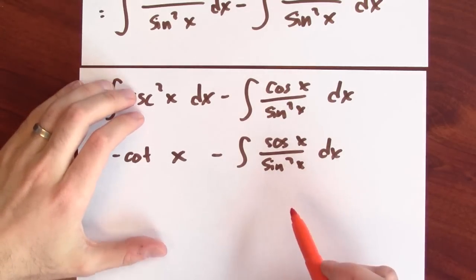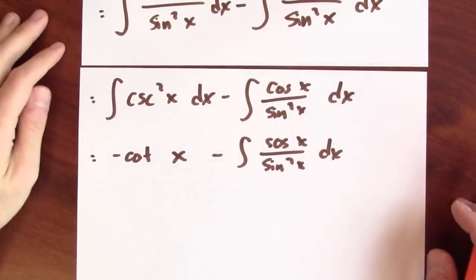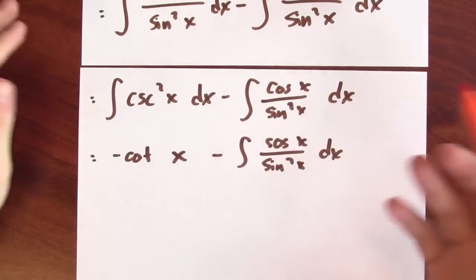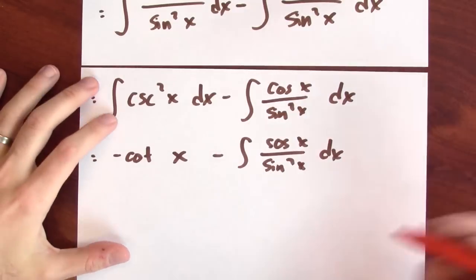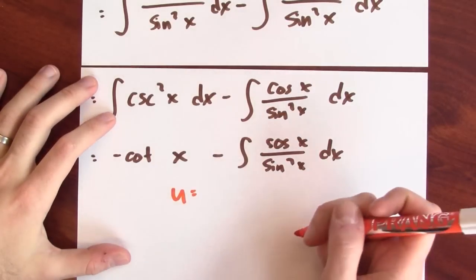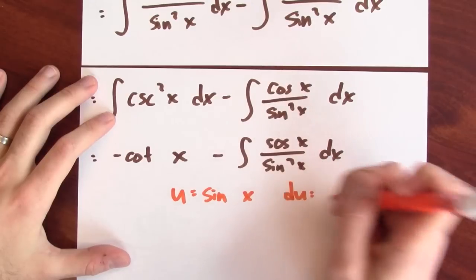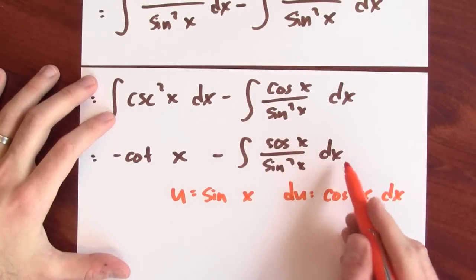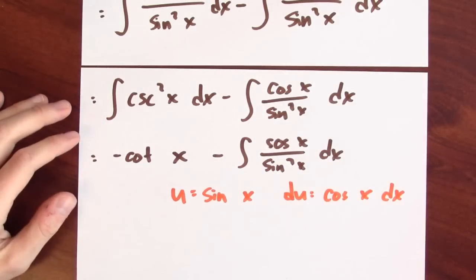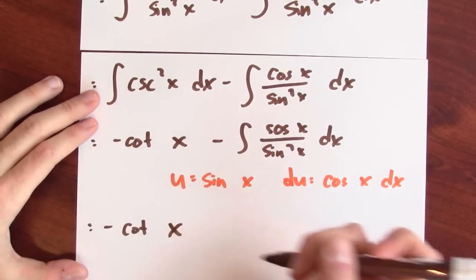What about that other integral? I could read this as cotangent times cosecant and just recognize the anti-derivative that way. But to demonstrate the technique, I can also apply u-substitution. So let's let u equal sine x; in that case du is cosine x dx, which is exactly the numerator there.